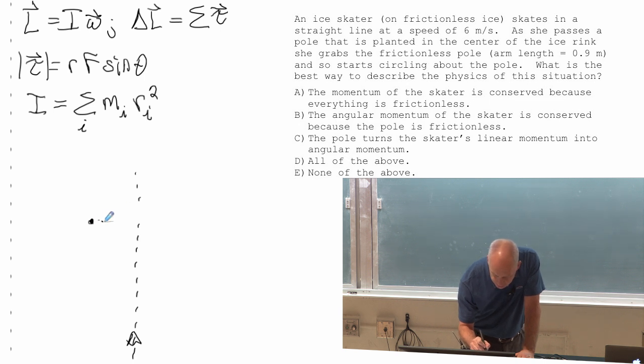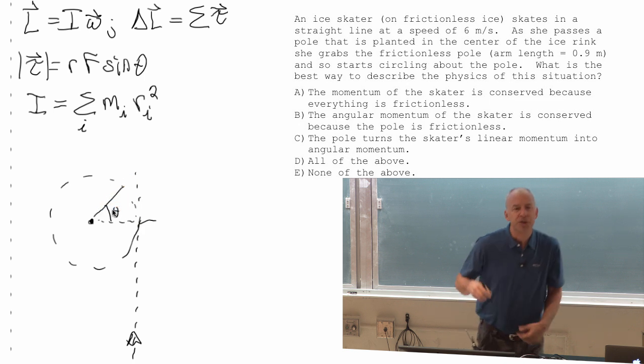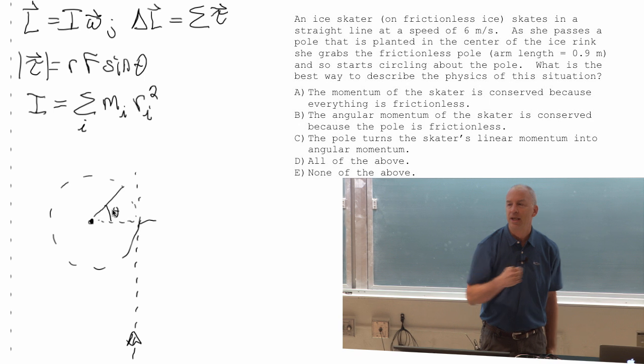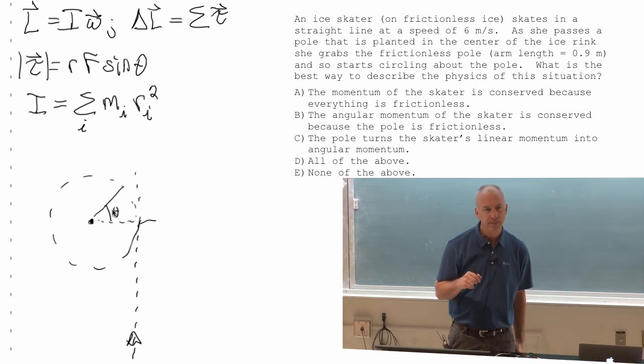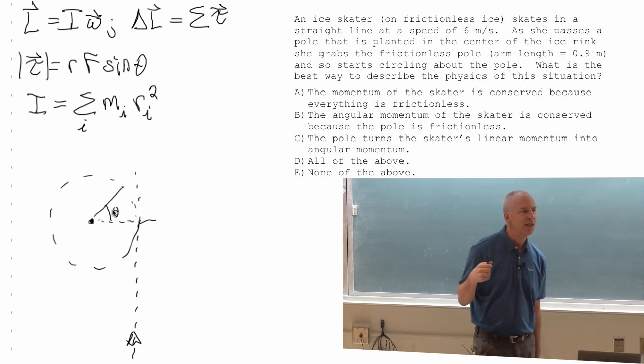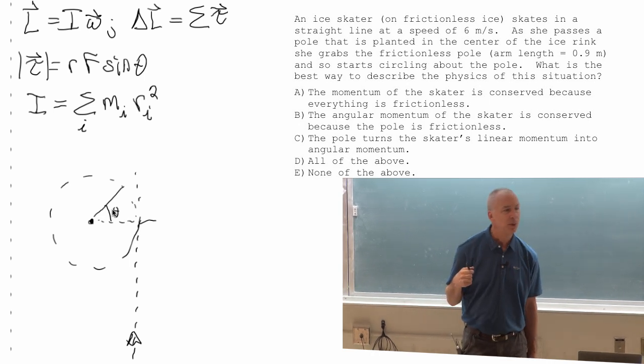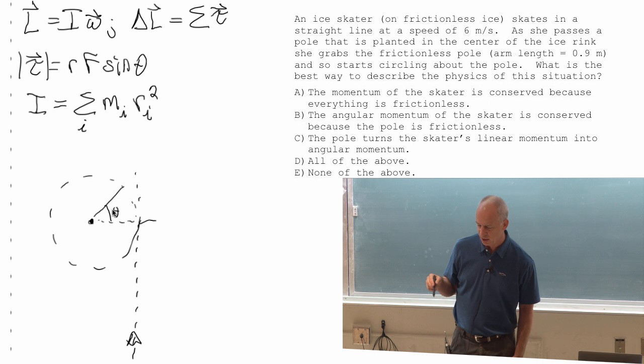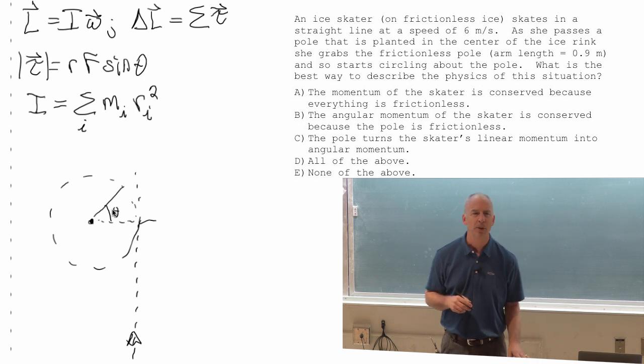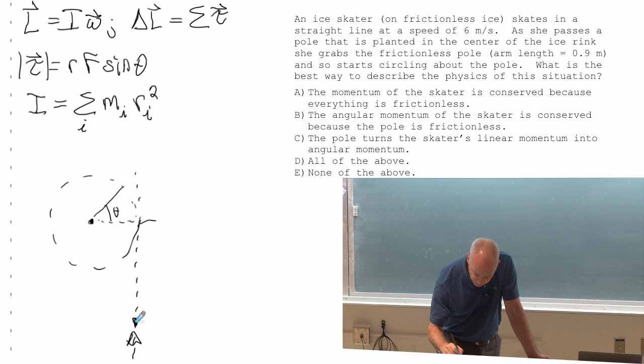And then from then on, as she circles around the pole you could say, well that angle theta is changing with time. So the question is, was theta changing, was there an angular momentum before she grabbed the pole? Was the angle, was her angle changing as she moved along here in a straight line?